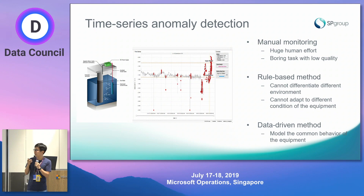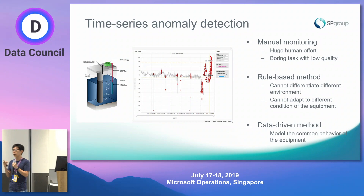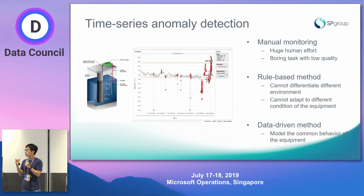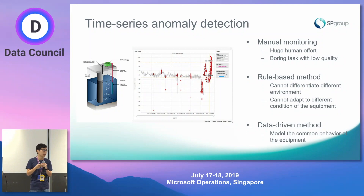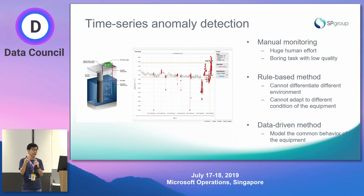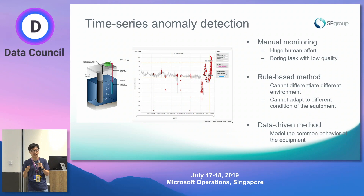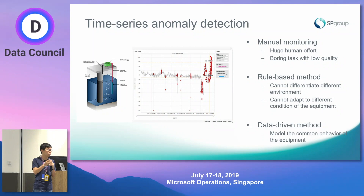The second type is rule-based methods, where you set minimum and maximum values for measurements according to OEM specs — anything within the range is deemed normal, anything outside is deemed abnormal. The disadvantage is that these methods introduce a lot of false alarms, and the fixed setup does not adapt to different environments or situations. The same type of equipment deployed in different environments will behave differently as conditions evolve, so what is normal in one situation may not be normal in another.